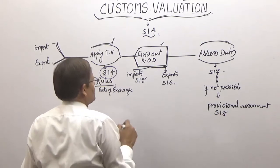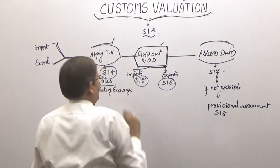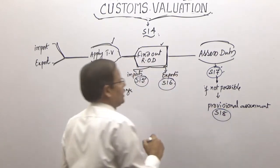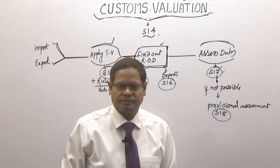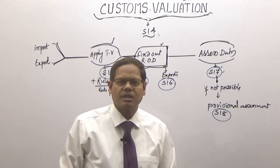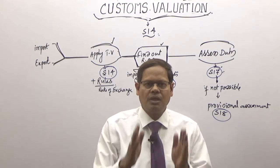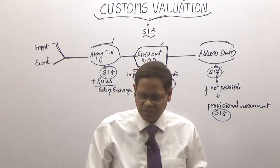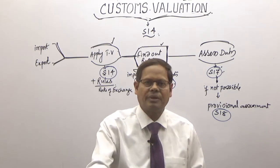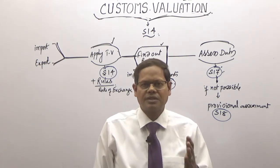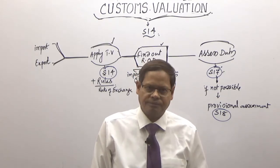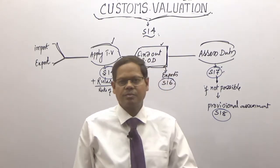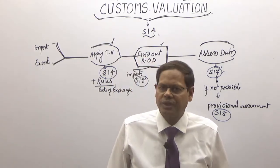So to summarize: Section 14 is the valuation section, Section 15 or 16 is for the rate of duty, Section 17 is the actual assessment, and if not possible then Section 18. The section numbers 14 through 18 must be remembered. Assessment is simply value multiplied by rate of duty — it is nothing but computation of duty.